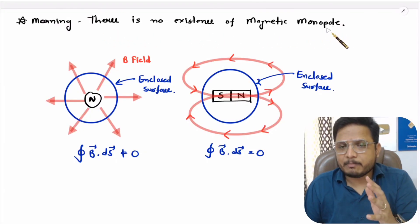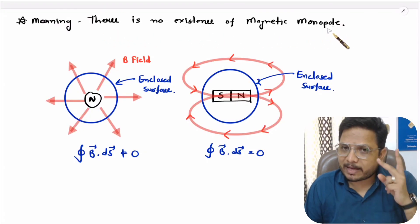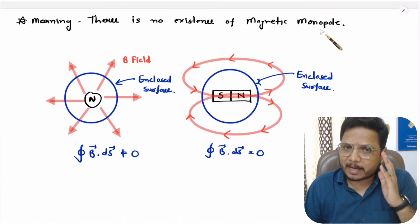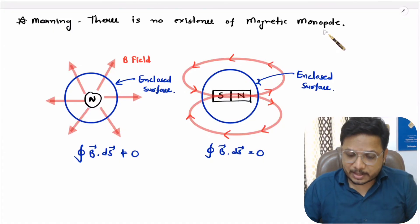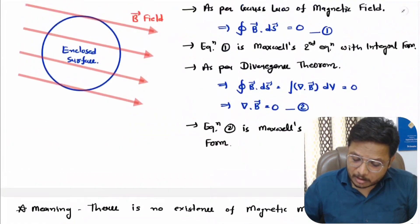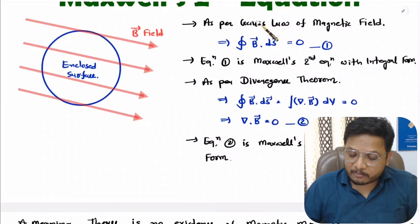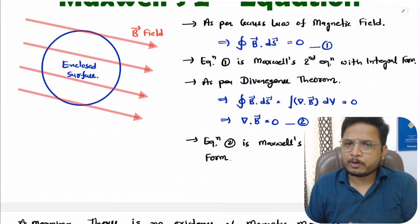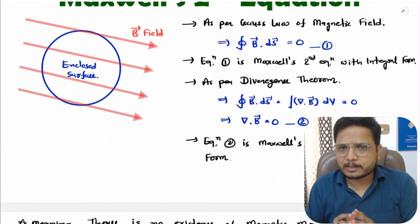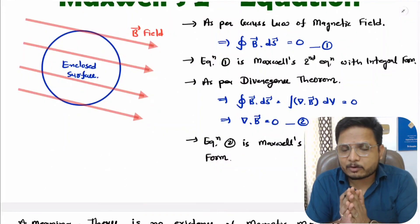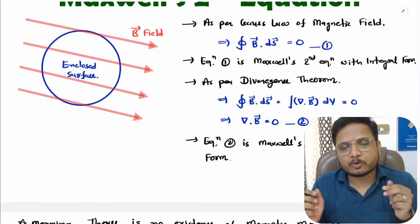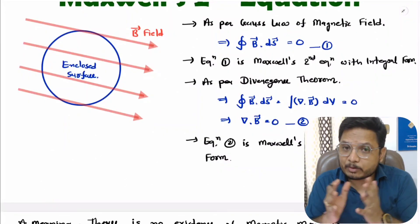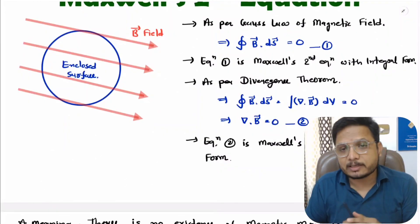That is the basic meaning of Maxwell's second equation, and Maxwell's second equation is based on Gauss's law of magnetic field. I hope you have understood this. If there is anything you'd like to share, just note it down in the comment section — I'll be happy to help you. Thank you so much for watching this video.